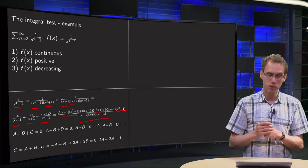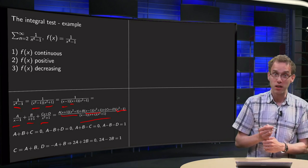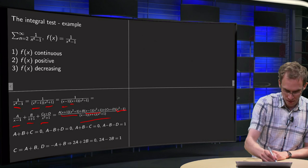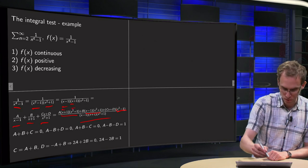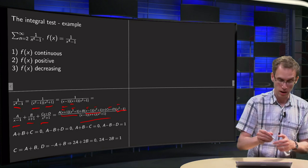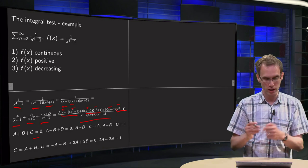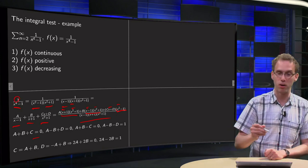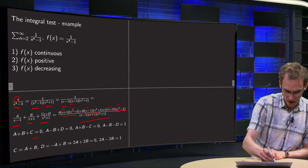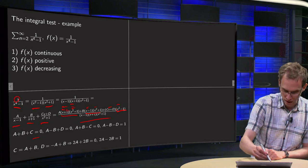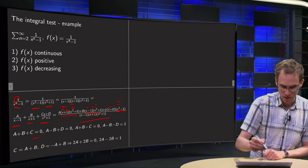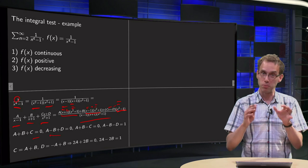We do some bookkeeping. Looking at the x³ terms: we get A·x³ plus B·x³ plus C·x³, so A + B + C = 0 because there is no x³ on the right-hand side. Then looking at x² terms: we have A, minus B, and D, so A - B + D = 0.